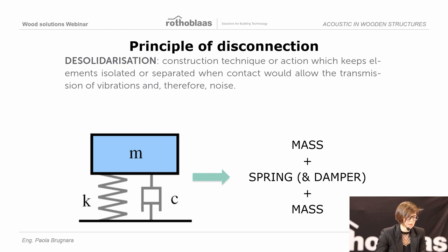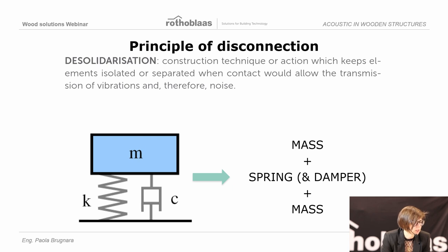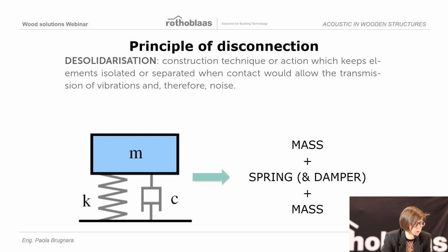The principle of disconnection is this construction technique that keeps elements isolated and separated in order to avoid the transmission of vibration and noise through the structure. It consists of a mechanical model which is mass-spring-mass. The first mass is for example a wall, the second mass is for example the slab, and the spring between them is the resilient profile — an elastic material that should also have viscous properties.